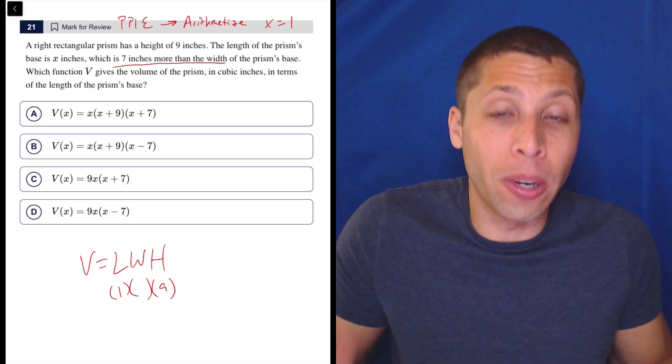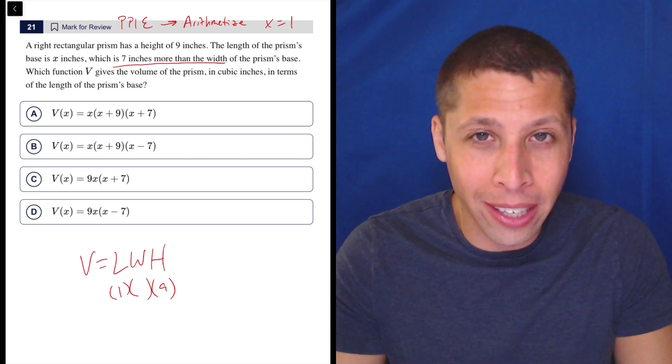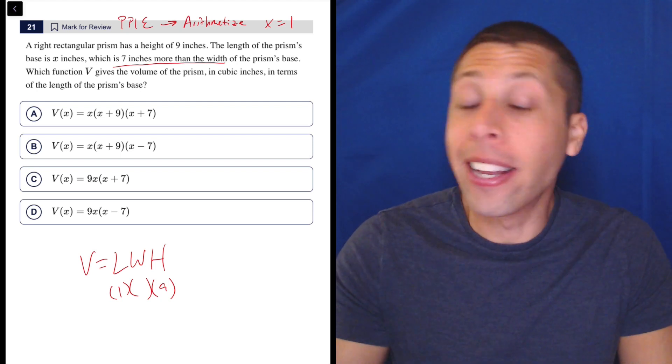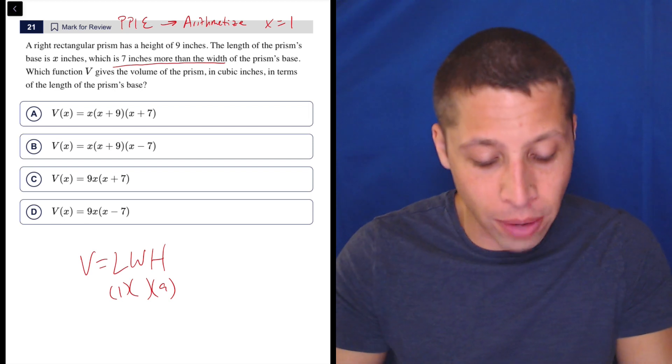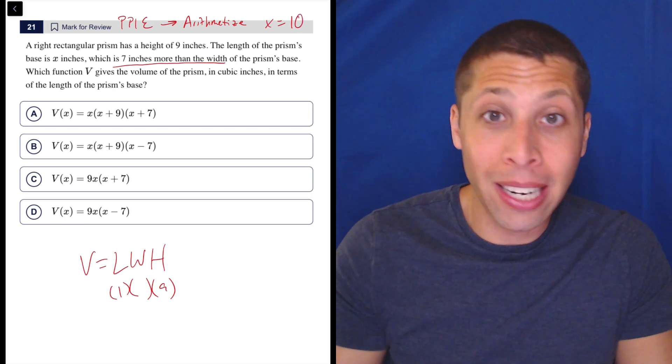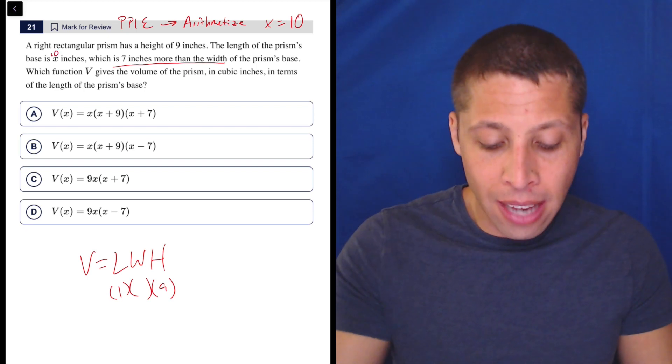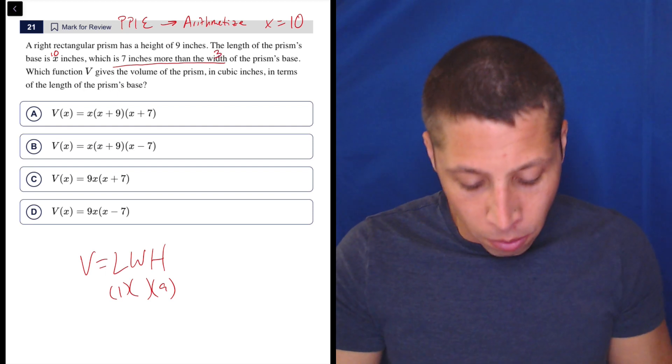This is something that happens, especially with stories where we just pick a random number. Sometimes that random number doesn't work because it produces an invalid result. And that's okay. We can always adjust, right? So let's just make it instead of a length of one, let's make it a length of 10. Now, if that's 10, that is seven inches more than the width. So what's the width? The width is three.